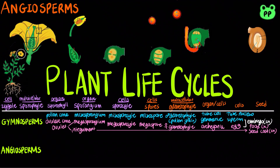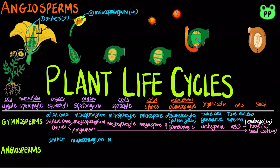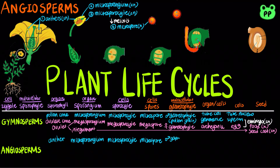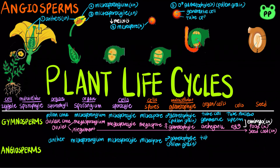In the life cycle of an angiosperm, the mature sporophyte contains reproductive structures known as flowers. The anther, which is part of the stamen, contains the male organ known as microsporangium, which produces microspores through cells known as microsporocytes. Microspores develop into male gametophytes known as pollen grains. Similar to gymnosperms, the pollen grain contains tube cells which give rise to the tube nucleus and generative cells that give rise to sperm.